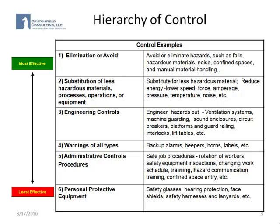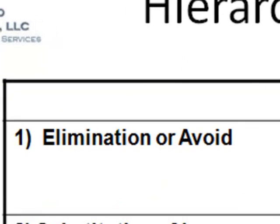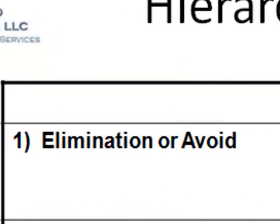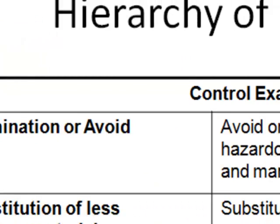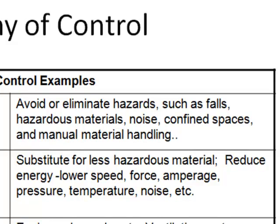This is the hierarchy of controls. The most effective at the top is to eliminate or avoid the risk or the hazard completely. In other words, there's no exposure. By not doing something, and not being close to the hazard, there can be no loss potential.